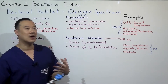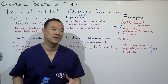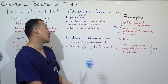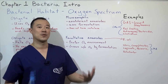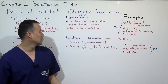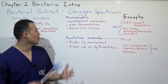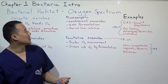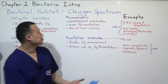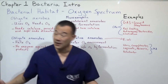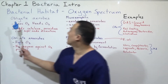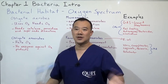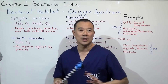Facultative anaerobes are essentially the opposite of microaerophilic bacteria. They prefer an oxygen-rich environment but can also grow without oxygen by fermentation.